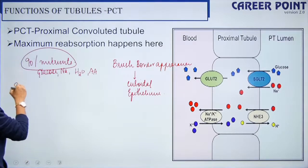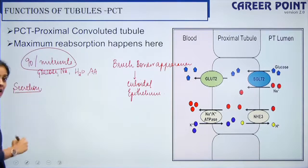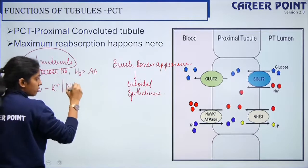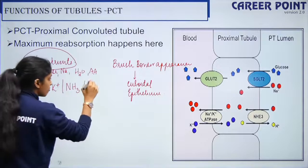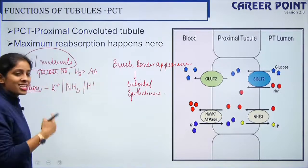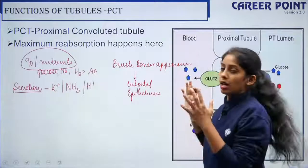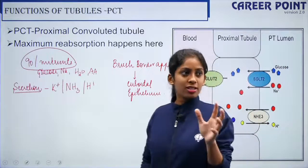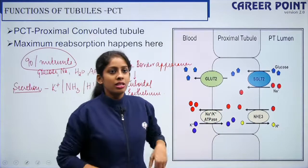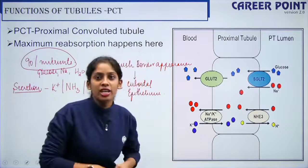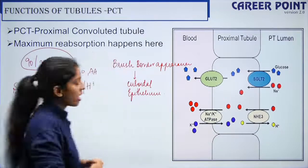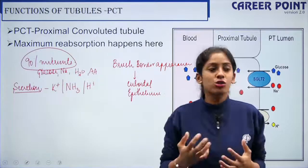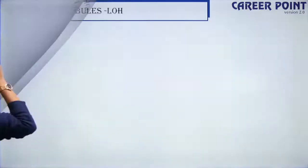The PCT secretes K⁺, ammonia, and H⁺ into the filtrate. So the PCT plays a role in both reabsorption and secretion. That is the function of the PCT — it helps in maximum reabsorption and also secretes substances into the filtrate.